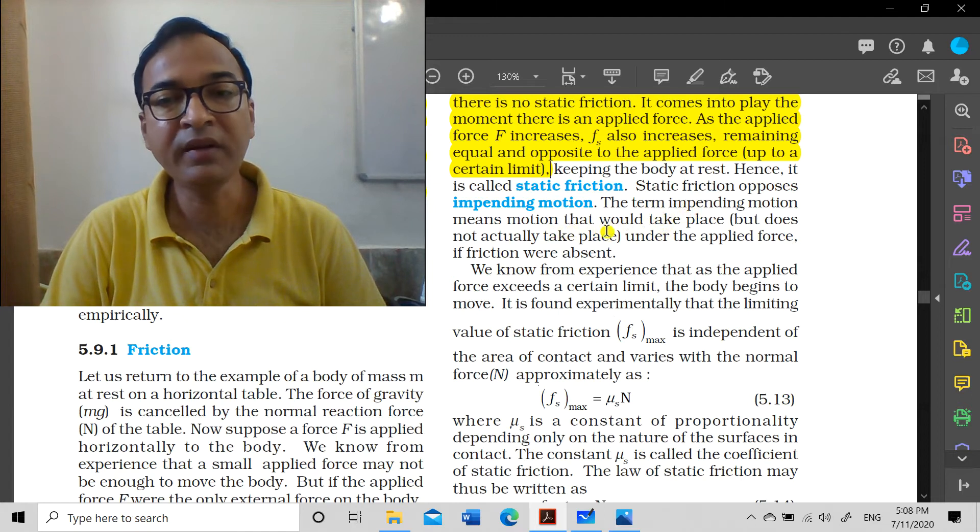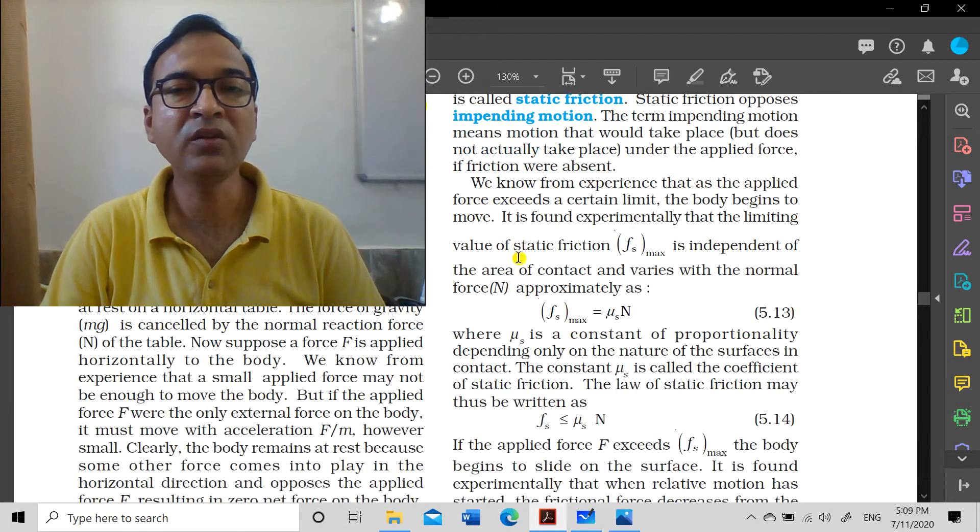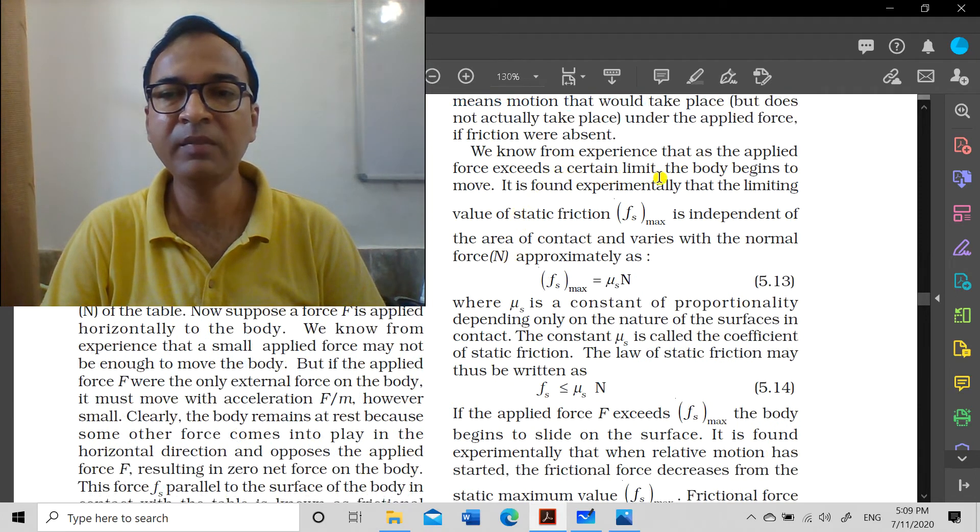Up to a certain limit which we define as the limiting value, it will increase, keeping the body at rest. The body remains at rest, hence it is called static friction because it's in a stationary state. Static friction opposes impending motion. The term impending motion means motion that would take place but does not actually take place under the applied force if friction were absent.